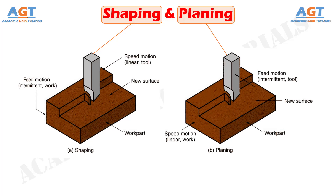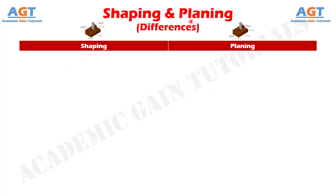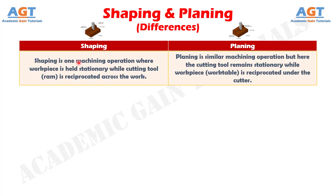So, let's look into the basic differences between shaping and planing in a tabular form. Difference number 1: Shaping is one machining operation where workpiece is held stationary while the cutting tool, on the ram, is reciprocated across the work, whereas planing is a similar machining operation but here the cutting tool remains stationary while the workpiece, on the work table, is reciprocated under the cutter.